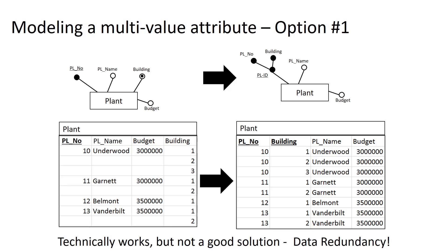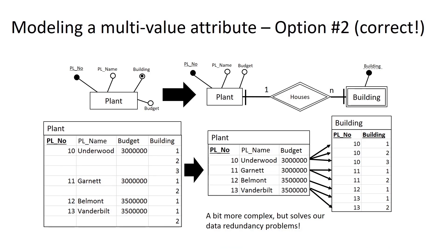Generally, we want to avoid data redundancy whenever we can. The other option for solving this problem would be to create a weak entity for building and have plant be in a one-to-many relationship with building. In this case, we have our plant number, plant name, and budget in the plant table, and then in the weak entity for building, we have the plant number and the building ID — one row per building that goes with each plant. This solution is a little more complex, but we have introduced no data redundancy.